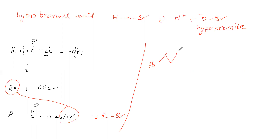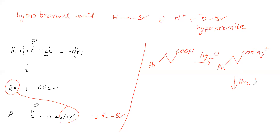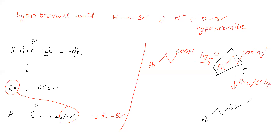Now let us see some reactions. We take a carboxylic acid and treat it with silver oxide to get the silver salt of carboxylate. Then we treat it with Bromine in CCl4 — that is the Borodyne-Hansdecker reaction. In this reaction, replace COO minus by Br. So the product is the corresponding bromoalkane.